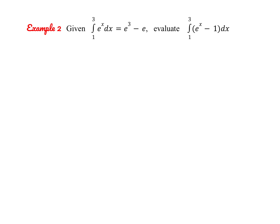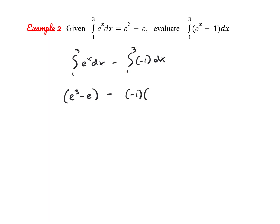Let's try another one. We're given that the integral from 1 to 3 of e^x dx = e³ − e. We want to evaluate the integral from 1 to 3 of (e^x − 1) dx. Using the difference property, we split it into the integral of e^x minus the integral of negative 1. The first equals e³ − e, and the second is a constant function: height negative 1 times (3 − 1). So the answer simplifies to e³ − e + 2.